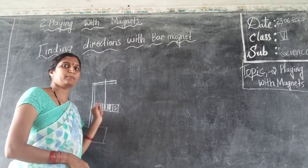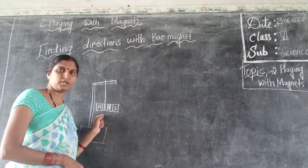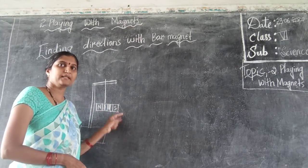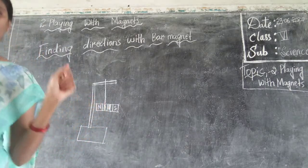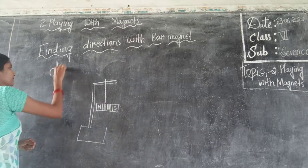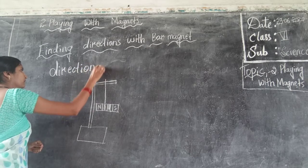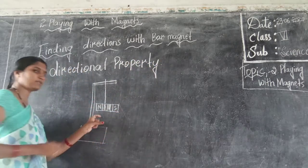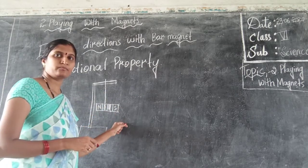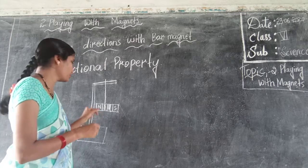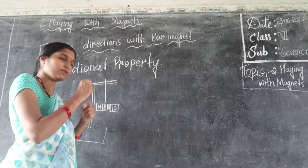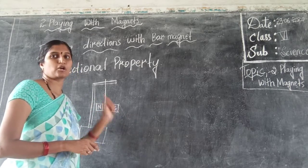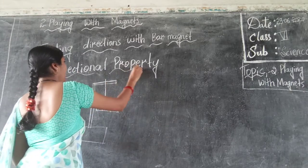The marked portion of the magnet represents the north direction and is called the north pole, and the south end is called the south pole. This property is called the directional property. The marked point always points towards the north direction, so it is called the north pole, and the other end is called the south pole. This property is called the directional property of the magnet.